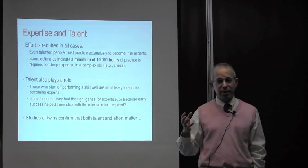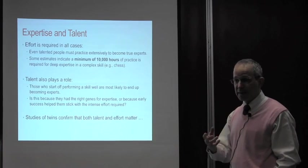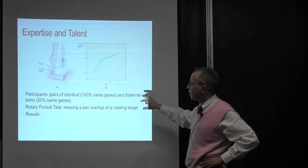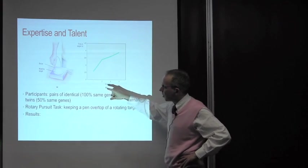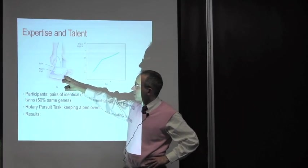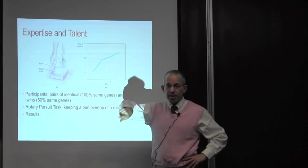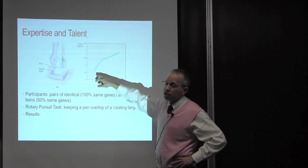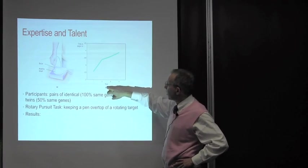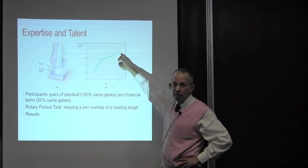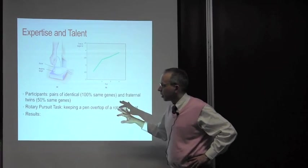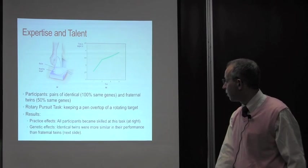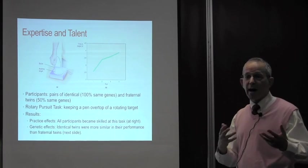One of the ways in which the issue of nature and nurture has been teased apart is by looking at twins, both identical and fraternal. This is a study that shows pairs of identical twins with 100% of the same genes and fraternal twins with 50% of the same genes. It's called the Rotary Pursuit. There's a rotating ring and a stylus, and your job is to track it at various speeds and rotations. That's the kind of skill you can just get better and better at.